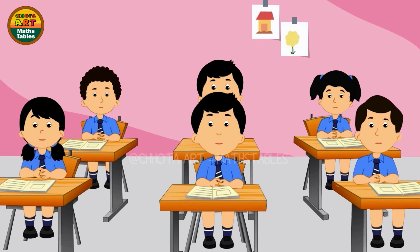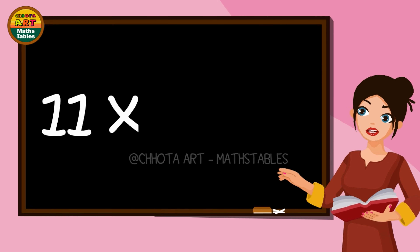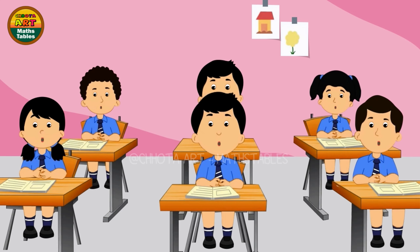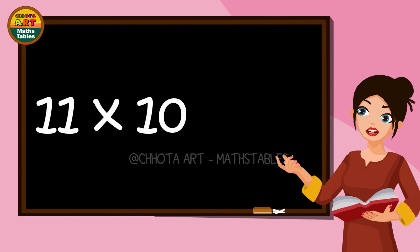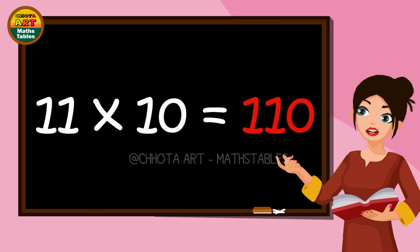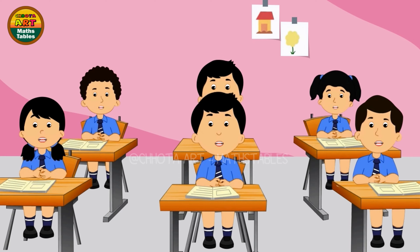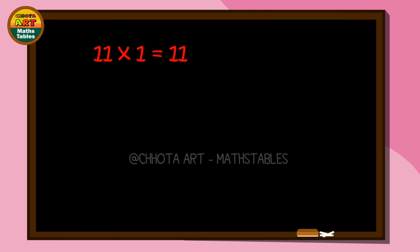11 nines are 99. 11 tens are 110. 11 tens are 110. 11 ones are 11.